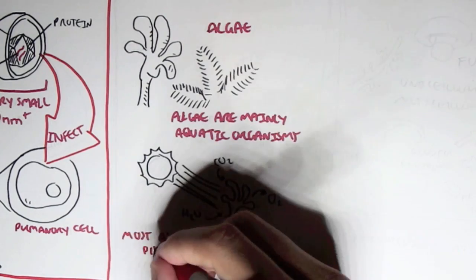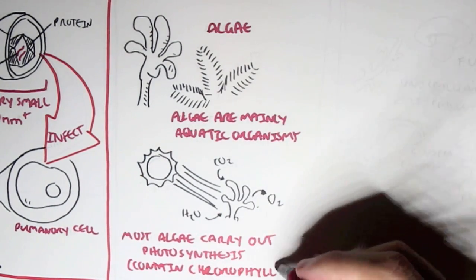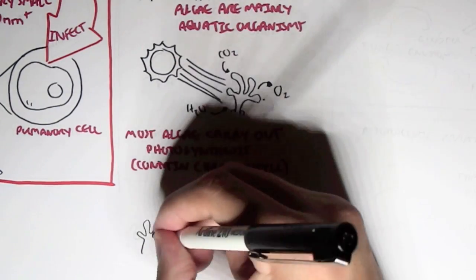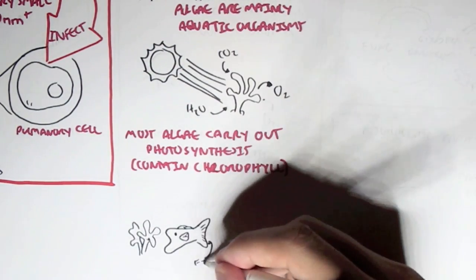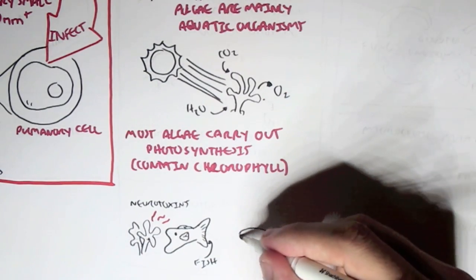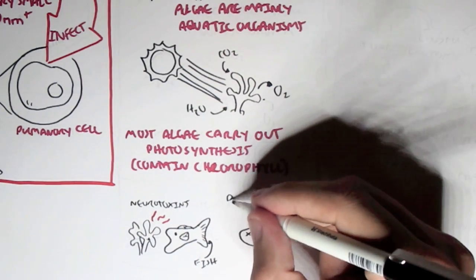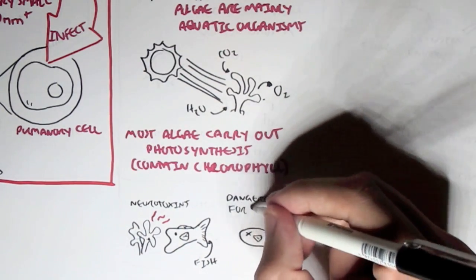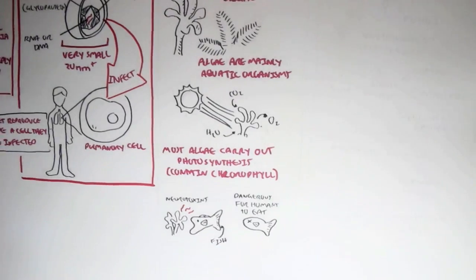And so because they can perform photosynthesis, they contain what's called chlorophylls. And most algae are not actually toxic to humans, because we usually eat seaweed, for example. However, some types of algae secrete neurotoxins. And so, for example, if a fish in the sea were to eat an algae, which then the algae would secrete neurotoxins once inside the fish, this fish would become poisonous. And it's poisonous to humans if we consume this fish.